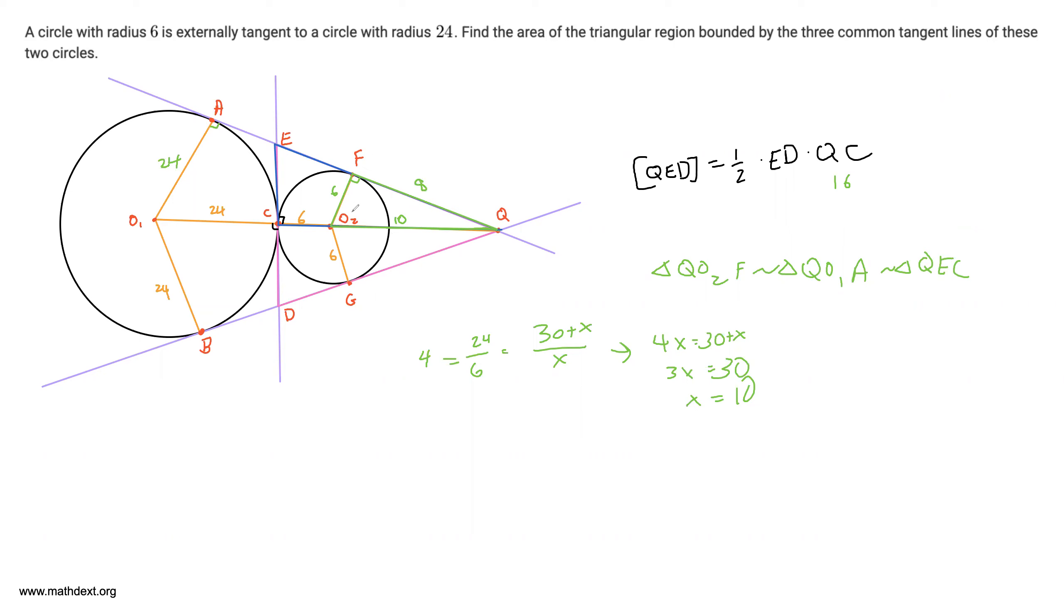So we can find EC because we already know one length. QC is equal to 16. So EC over QC, which is 16, is equal to 6 over 8, the ratio of the two legs, 6 over 8. Therefore, EC is equal to 12.